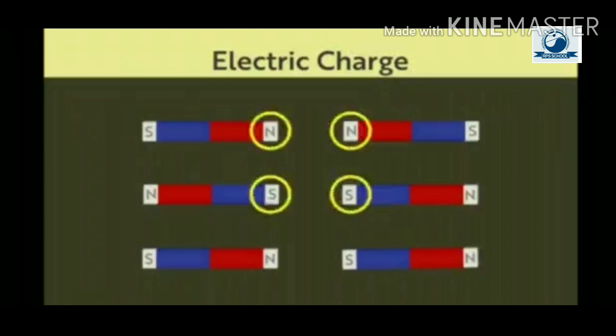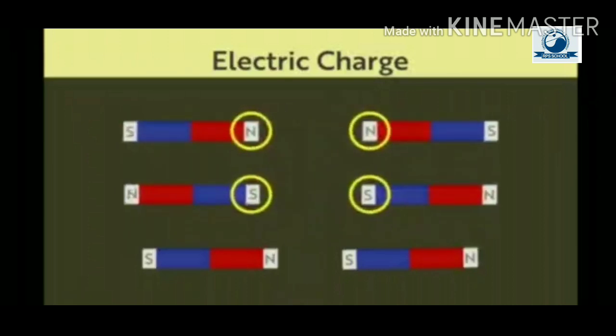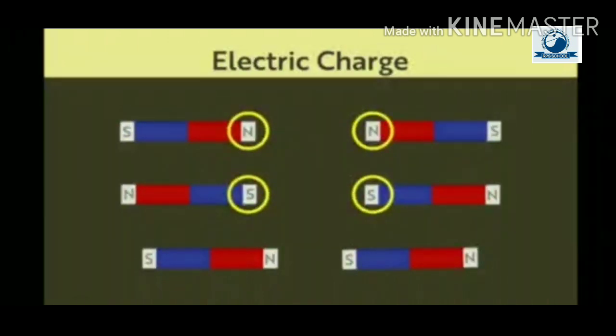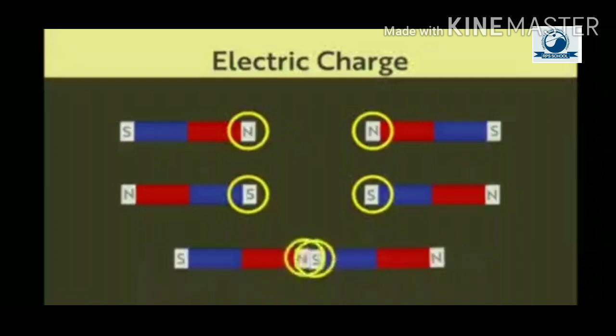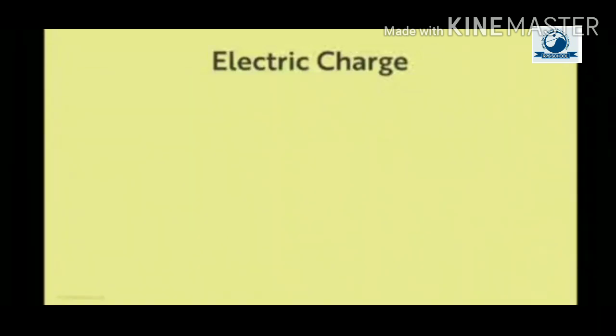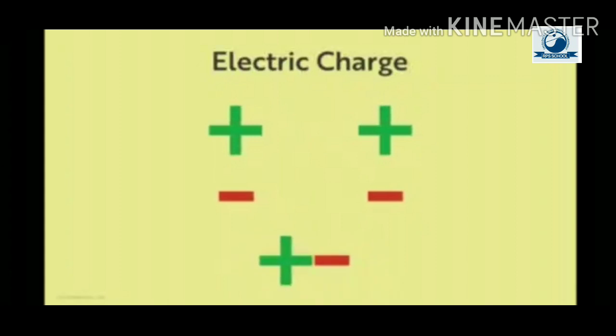We know that two like poles—that is, two north or two south poles of a magnet—repel each other, and unlike poles attract each other. Similarly children, like charges, that is two positive or two negative, repel each other, and unlike charges, that is opposite charges, attract each other.